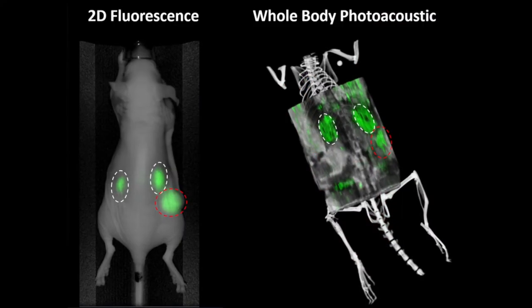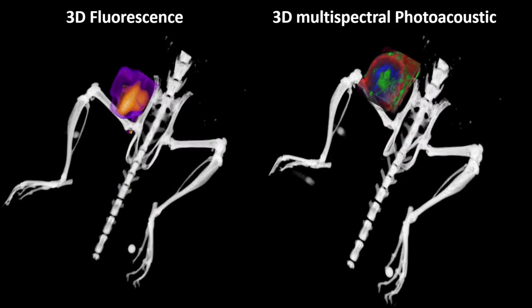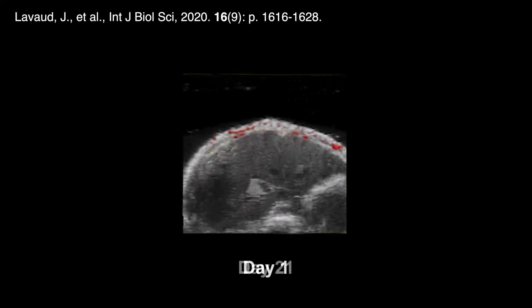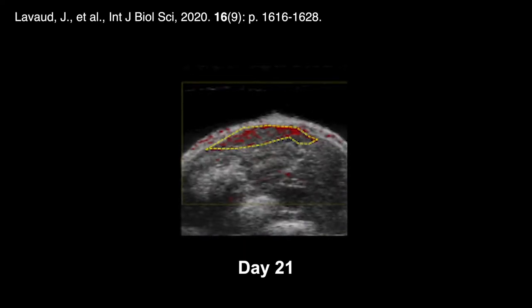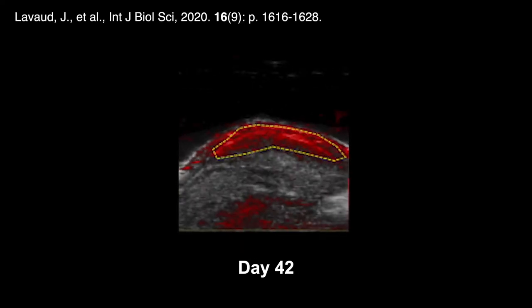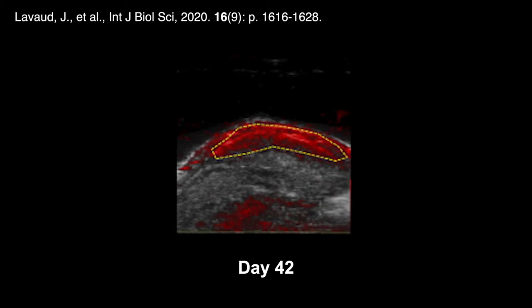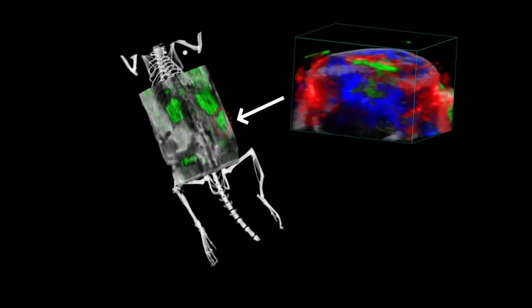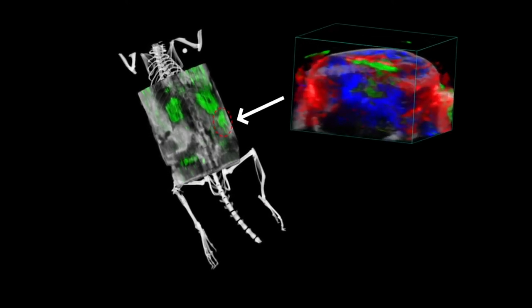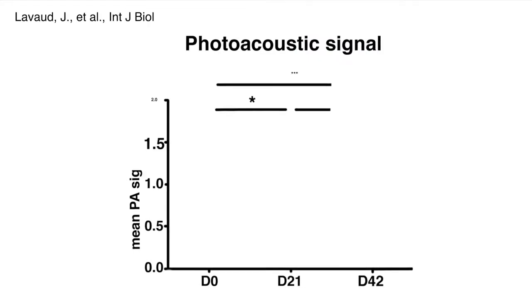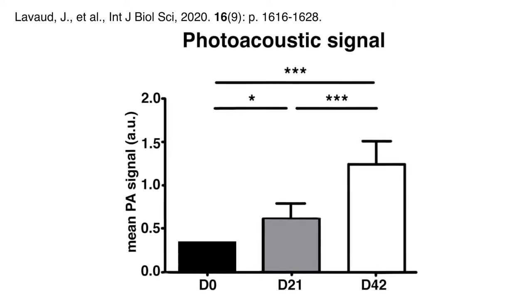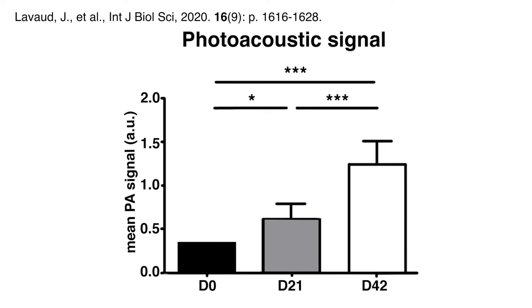Angiostamp 800 can be used across both fluorescence and photoacoustic imaging modalities. Using this agent and the Vivo Laser X, you can follow cancer development and metastasis non-invasively at several time points. The Vivo Laser X allows whole-body 3D imaging, as well as highly detailed exploration of specific areas of interest. Quite simply, the more alpha-v-beta-3 integrin expressed in the tumor and its environment, the more signal is generated.